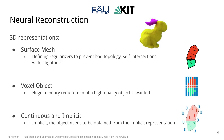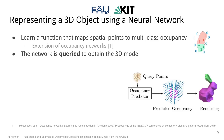To represent a 3D object, we learn a function that maps spatial points to multi-class occupancy. This is an extension of occupancy networks presented by Mescheder et al. in 2019. The 3D model is implicitly defined by the approximating neural network. To obtain the actual 3D object, you can query the function to build up a voxel model by querying on an equidistant grid, or march along the decision boundary using a method similar to marching cubes. The advantage is that without retraining or changing the architecture, we can change the inference resolution by simply querying more densely.